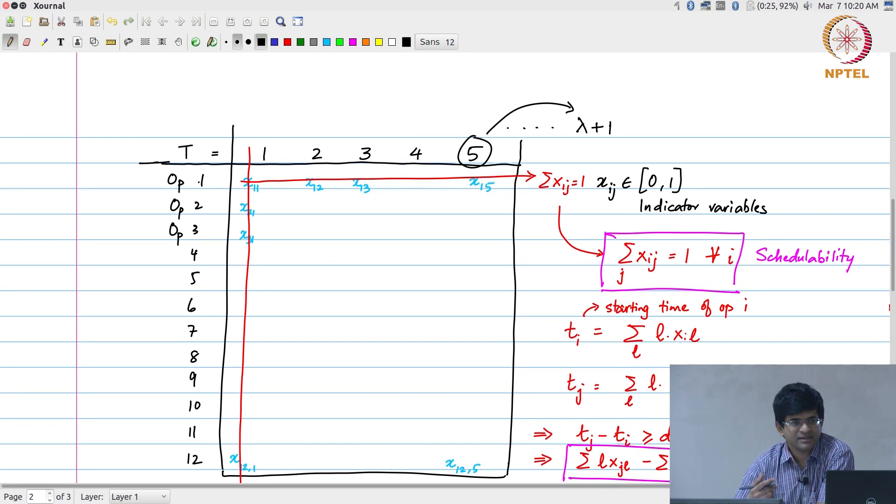For example, can you think of a value of lambda for which, no matter what my resource constraint, I will always be able to schedule this? There should be at least one time step for every operation. So lambda equal to 11 is sufficient. As long as lambda is at least 11, it means that no matter which way you schedule the operations, I have enough time to schedule all the operations because any operation once scheduled finishes within one clock cycle unit delay.